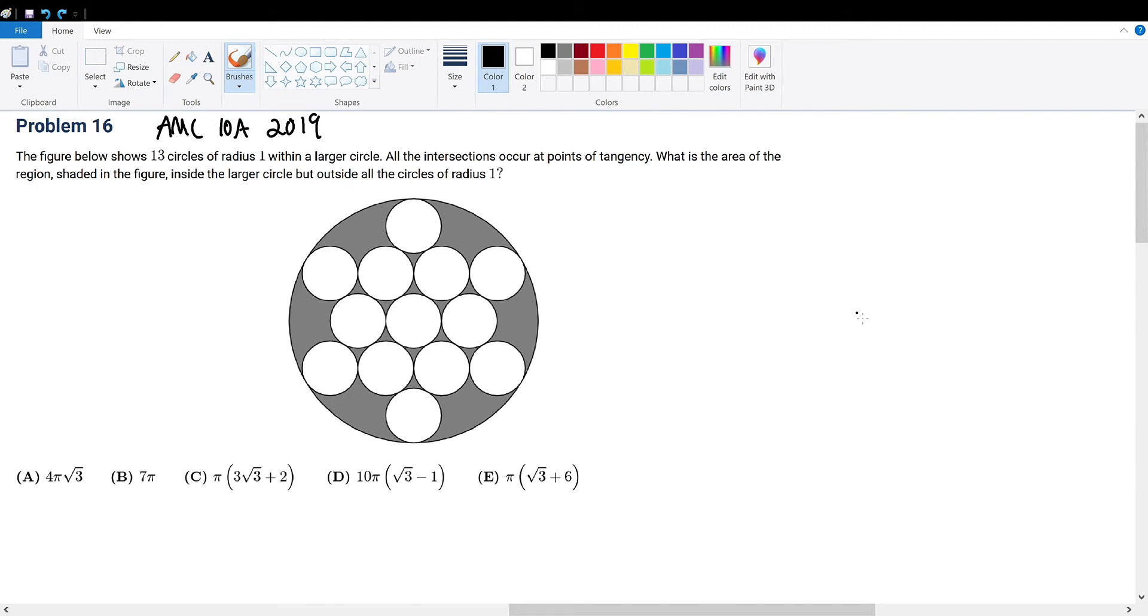AMC 10A 2019 problem 16. We're given these 13 inner smaller circles at points of tangency with radius of 1, and we're trying to find the shaded region area. So that is the question.